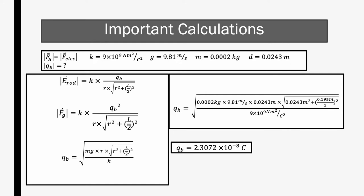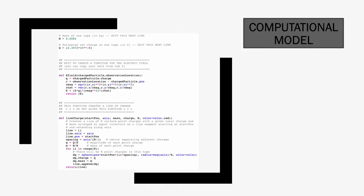Utilizing the electric field of a rod formula, I set this equal to Fg and found an expression for Qb. For Qb, I found that it was 2.3072 times 10 to the negative 8th Coulombs.